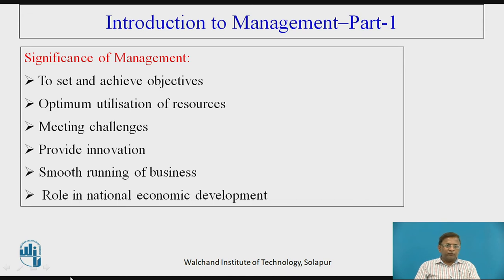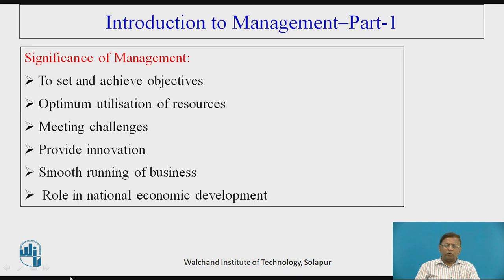Coming to the significance of management — management basically has to have some objective. They have to set the objectives and all their efforts must be directed towards achieving these objectives. Secondly, whatever resources are there — right from man, machine, material, manpower, whatever machinery and equipment you have — management is expected to have optimum utilization of all these resources. That is the main aspect of the significance of successful management in executing things.